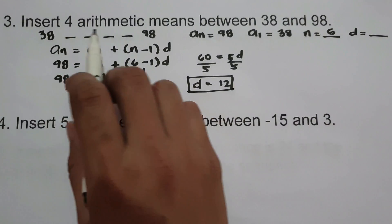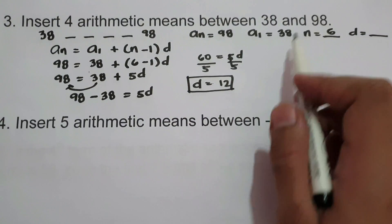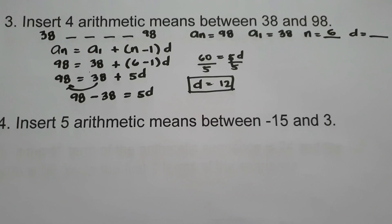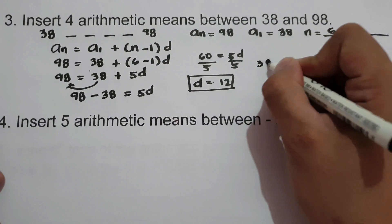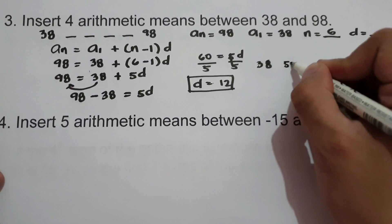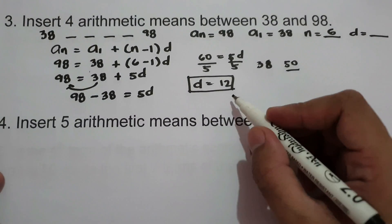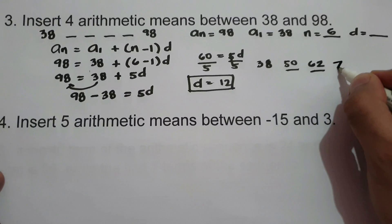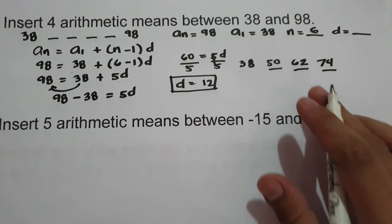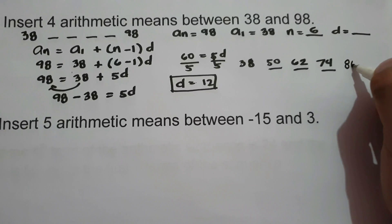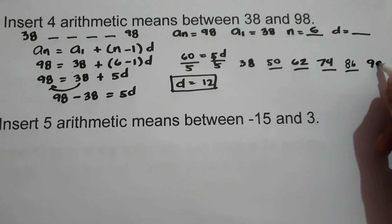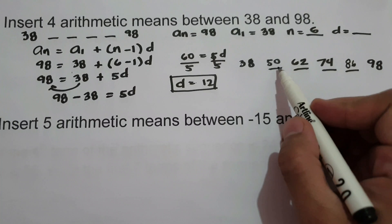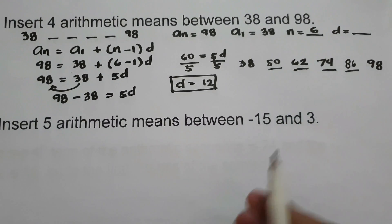To find the 4 arithmetic means between 38 and 98, add the common difference to the first term. So: 38 plus 12 is 50, 50 plus 12 is 62, 62 plus 12 is 74, 74 plus 12 is 86, and 86 plus 12 is 98 — the last term. So the 4 arithmetic means between 38 and 98 are 50, 62, 74, and 86.